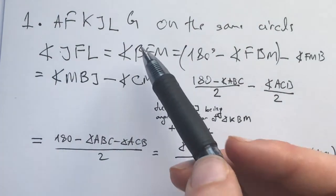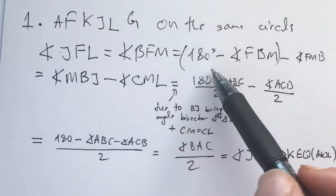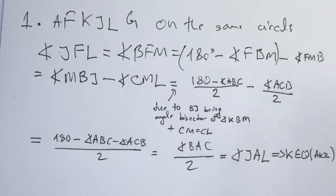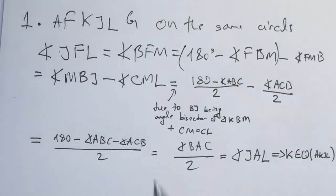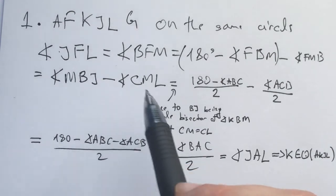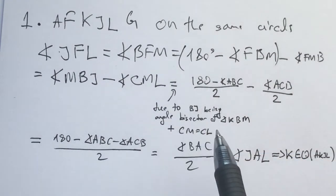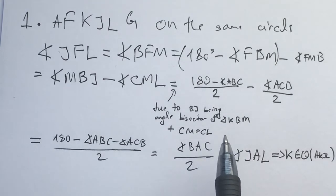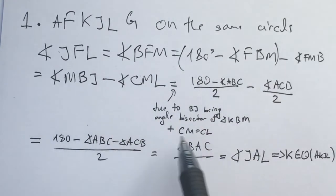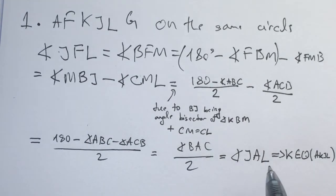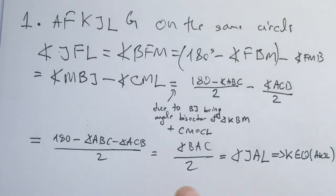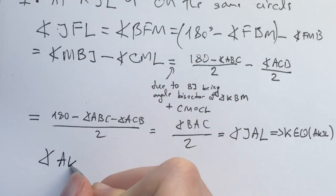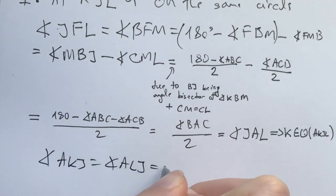Basically, JFL is equal to BFM. And then I would go, this is 180 minus FBM minus FMB, I treat this as one thing, the external angle of the angle BJ. And now we have MBJ minus CML, FMB is CML. And I'll do the BJ being the angle bisector of this angle and CM equaling CL. This is equal to this, this is equal to this, and now this is equal to half of BAC, which is equal to JAL, which means F is an element of the circumcircle of AKJL. And we already know that AKJL is a circumcircle because the angle AKJ is equal to the angle ALJ is equal to 90 degrees.